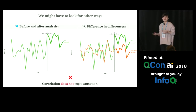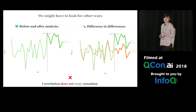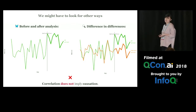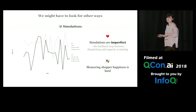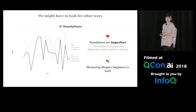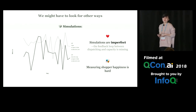So in the past, in the absence of A/B testing, we've tried many alternative approaches, including before-and-after analysis, difference-in-differences analysis, and time-based simulations. But they're not good enough for building causal relationships.